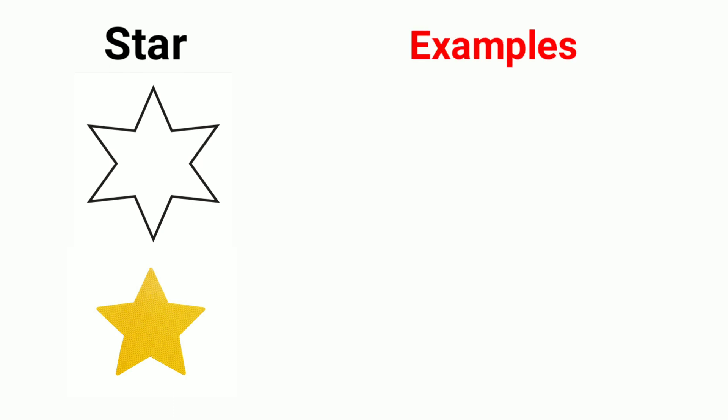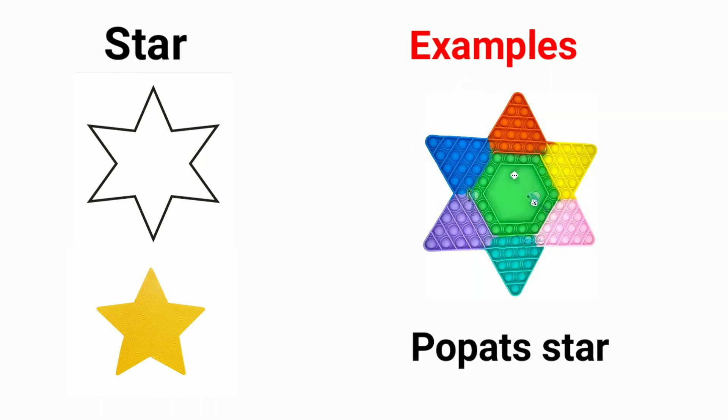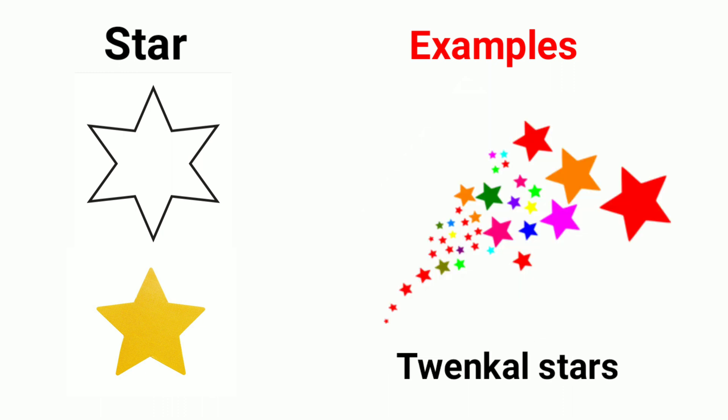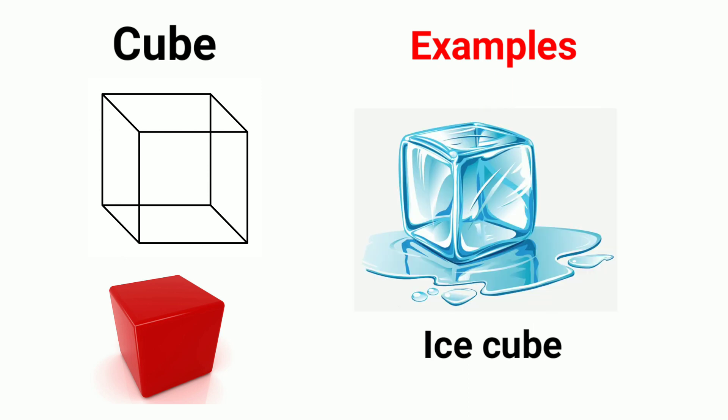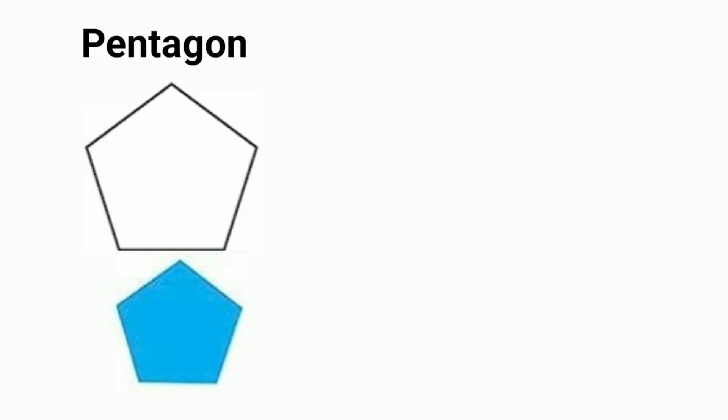Star shapes: star chocolate, puppet star, twinkle stars. Cube. Examples of cube shapes: dice cube, ice cube, magic cube. Pentagon.